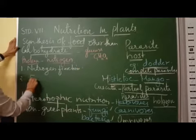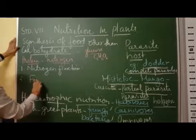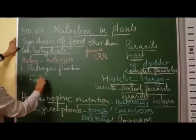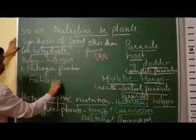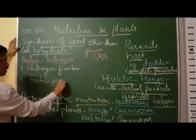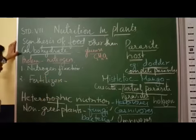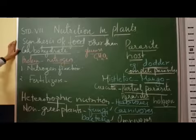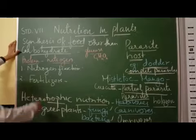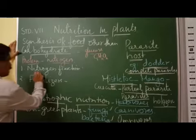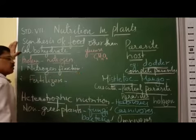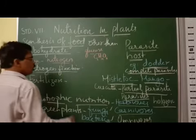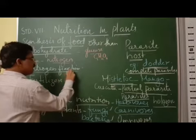Second, plants get nitrogen from fertilizers. So there are two ways by which plants get nitrogen, which are the sources of proteins. The first is nitrogen fixation — microbial-based nitrogen fixation — carried out by bacteria like rhizobium.